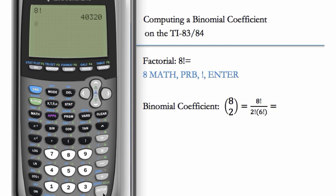If you want to compute a binomial coefficient, for example, 8 choose 2—out of 8 things you want 2 of one type and 6 of the other—instead of doing this manually with 8 factorial divided by 2 factorial times 6 factorial, we can do this in one step.